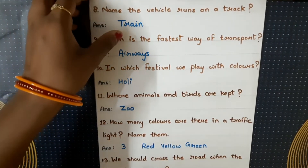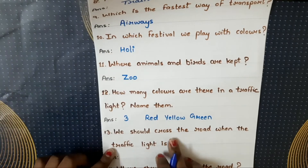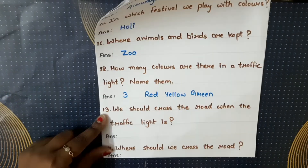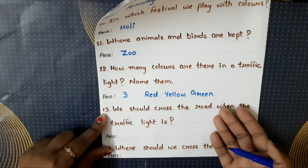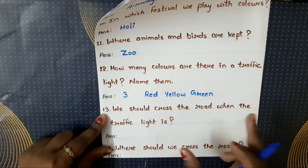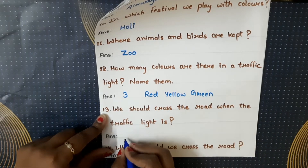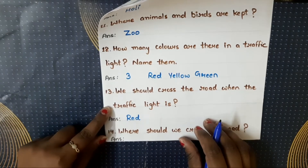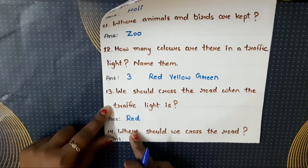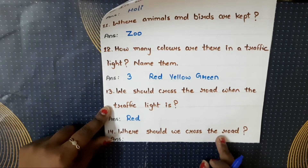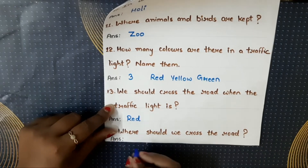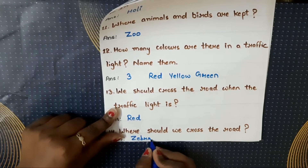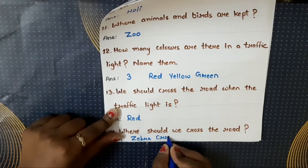Next question: we should cross the road when the traffic light is? Jab hum road cross karte hain toh traffic light mein kaunsi light jalni chahiye? The answer is red. Next question: where should we cross the road? Humein road kahan se cross karni chahiye? The answer is zebra crossing.